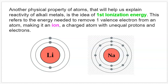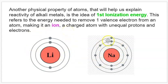First ionization energy refers to the amount of energy needed to remove a single valence electron from an atom, turning it into what we call an ion — a charged atom with unequal protons and electrons. We're going to focus on ions a lot more next week, but you can think about ions kind of like isotopes where you have differing amounts of neutrons; with ions you have differing amounts of electrons. For lithium, if it were to lose a single electron, it would have two electrons and three protons, giving it an overall positive charge. And similarly for sodium, since it also has one electron in its outer shell to lose.